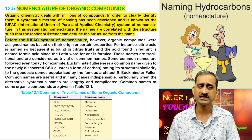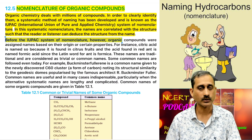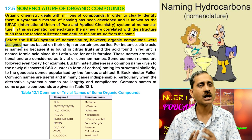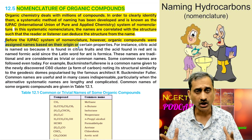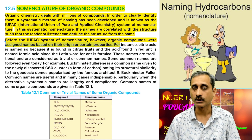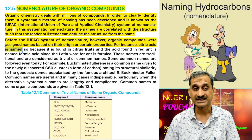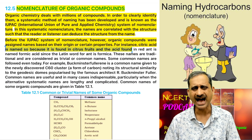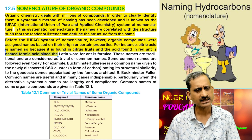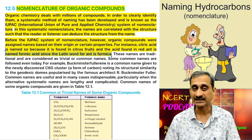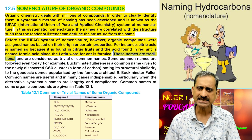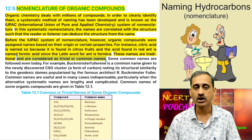Before the IUPAC system of nomenclature, however, organic compounds were assigned names based on their origin or certain properties. For instance, citric acid is named so because it is found in citrus fruits, and the acid found in red ants is named formic acid since the Latin word for ant is formica. These names are traditional and are considered as trivial or common names.